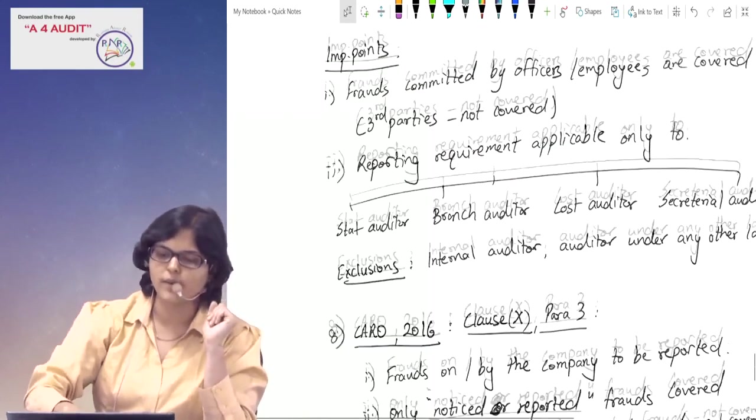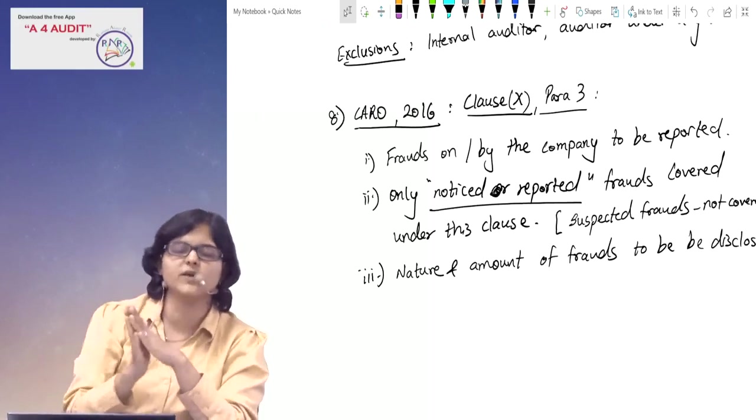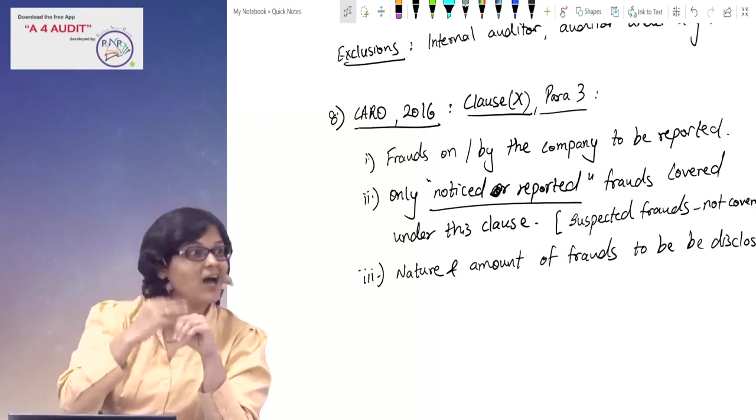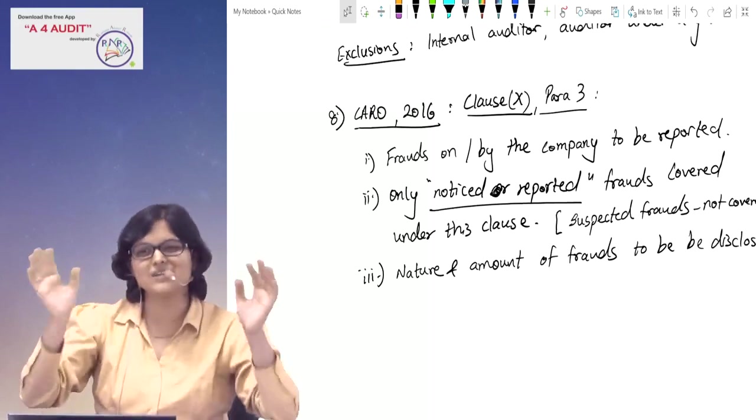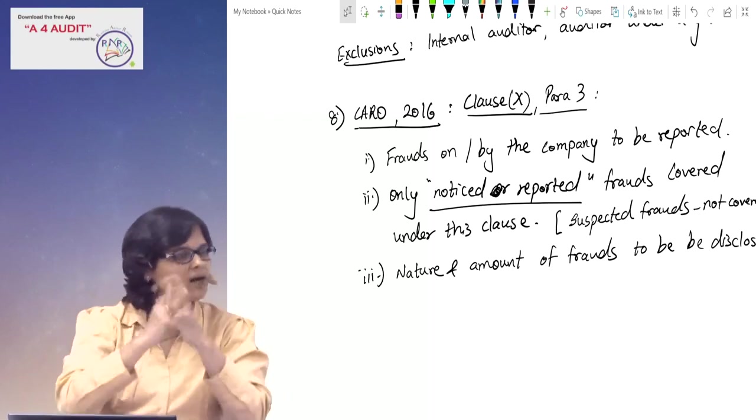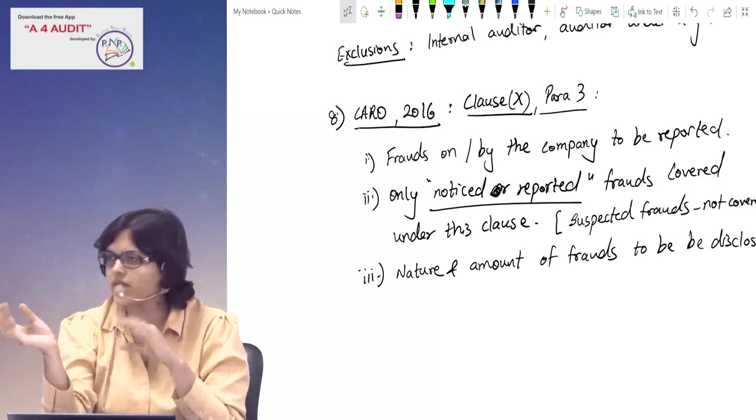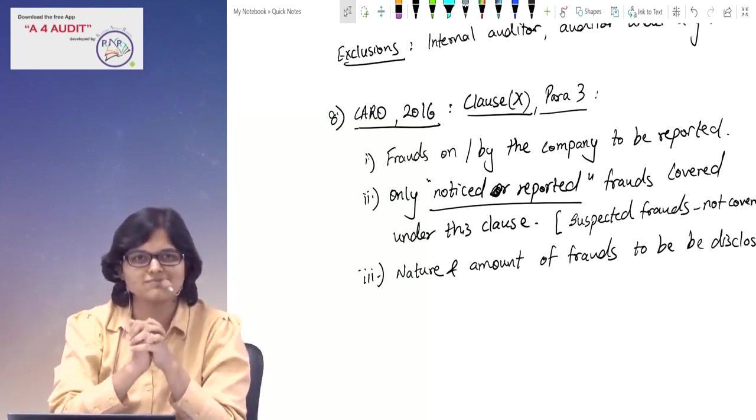After that, we have said frauds in the CARO - only frauds which are noticed and reported. Which clause comes in the CARO? Clause number 10, Para 3 of CARO 2016. Frauds on the company and frauds by the company will be reported. And last, reporting is positive - the nature of fraud and the amount of fraud.